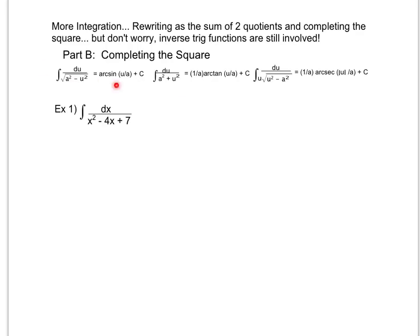I also notice it doesn't match any of these. I also notice that I can't separate this at all because I can only separate the top and put it over the same bottom. I don't have multiple parts to my top. So what if I tried to complete the square? The whole purpose of completing the square is when we cannot factor something.